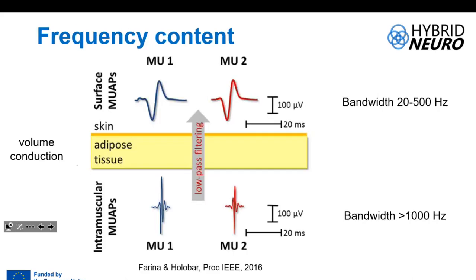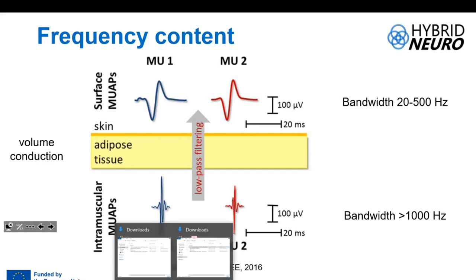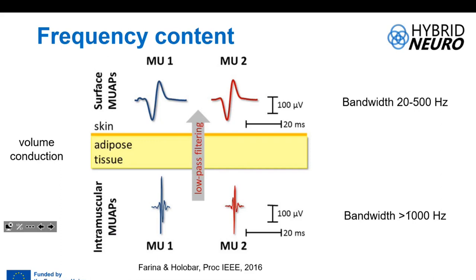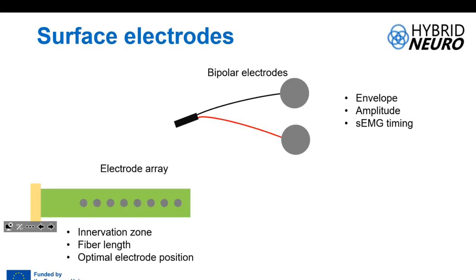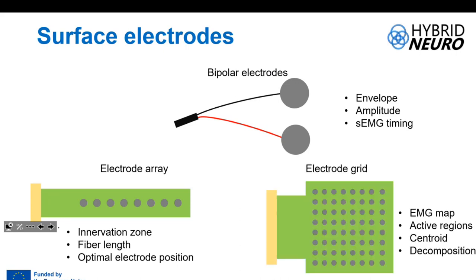These slides are mainly dedicated to surface signals because we will have another workshop dedicated to invasive recordings. The electrodes presented in the next slides are for surface EMG recordings. The classical configuration is bipolar electrodes — you place two electrodes and calculate the difference in voltage between the two points. You can also use an array of electrodes, such as eight detection points in a linear configuration, or bidimensional grids, for instance an eight-by-eight configuration.